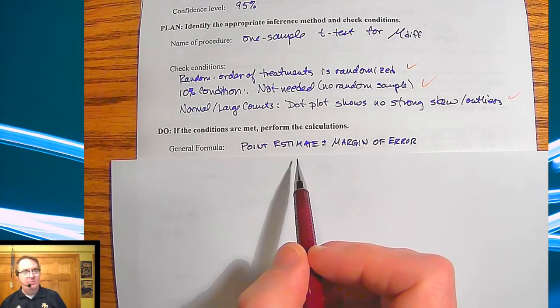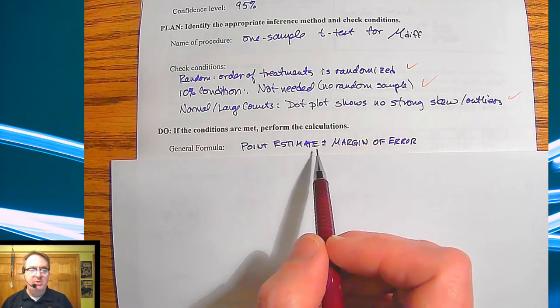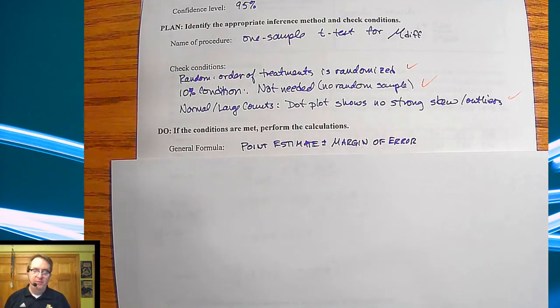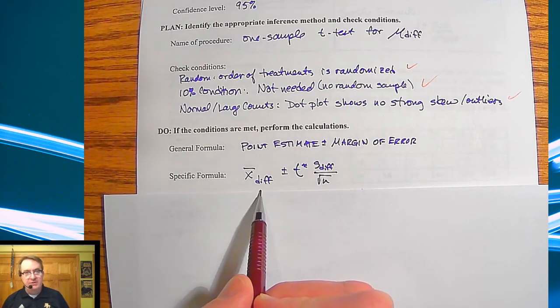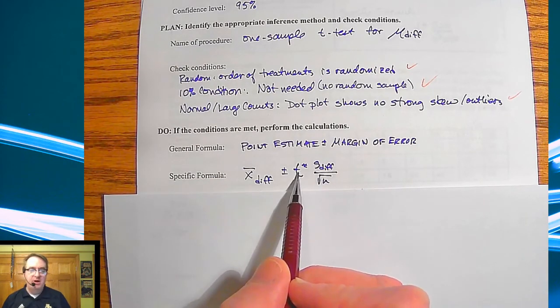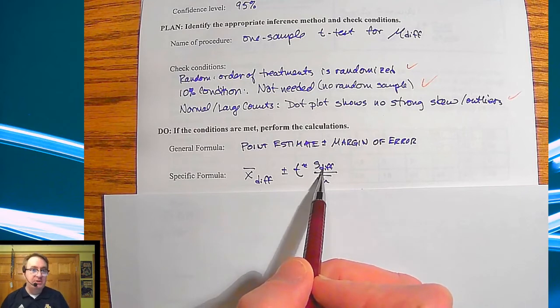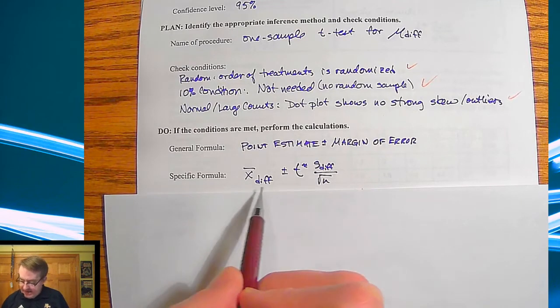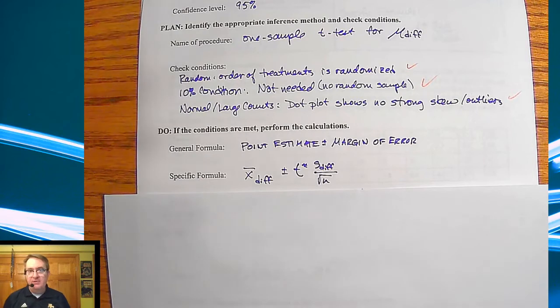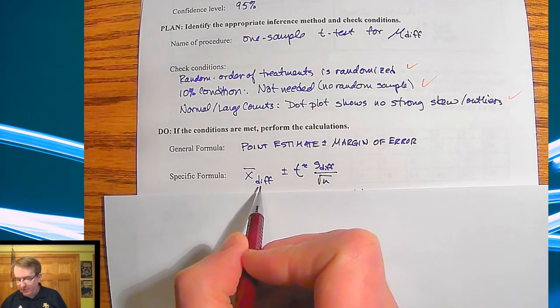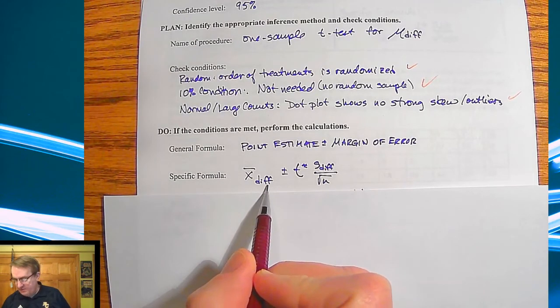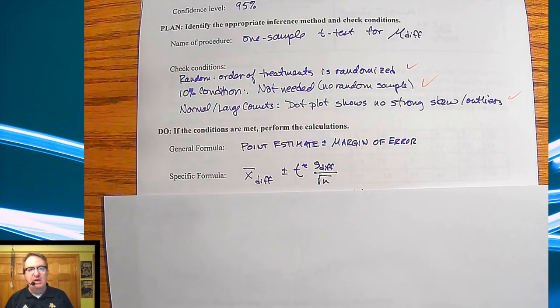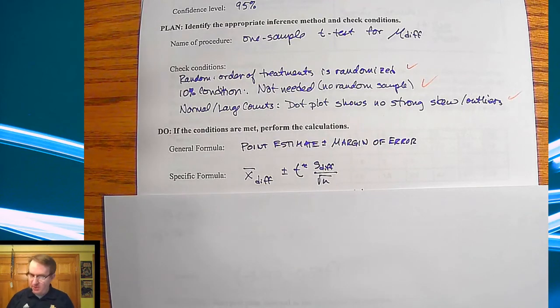So since all those things are met, general formula, same as what we've been doing for the last three lessons, point estimate plus or minus the margin of error. All right. Specific formula is the mean of the differences plus or minus t star times the standard deviation of the differences divided by square root of n. Again, notice not anything really significant here. The only real thing from this and what we did in the first time going through confidence intervals for means is the fact that I have the word differences down here. So it's very clear that we're doing the differences between what's going on.